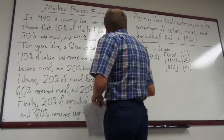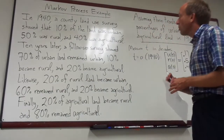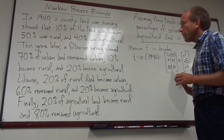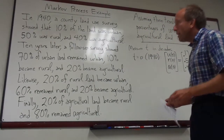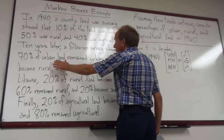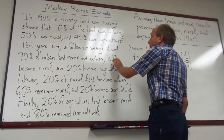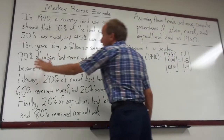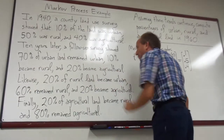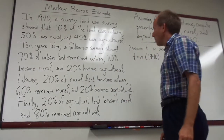Ten years later, a follow-up survey was done. 70% of the urban land remained urban, 10% of it turned into rural, and 20% of it became agricultural.